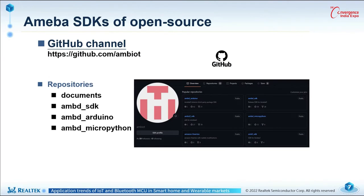After all the hardware introduction, let us move to the software side. Currently, all SDKs are listed under our GitHub channel. GitHub is a provider of internet hosting for software development and version control using Git, and it is the largest source code host as of November 2021. There are four repositories I am going to introduce: Documents, Amoeba-D SDK, Amoeba-D Arduino, and Amoeba-D MicroPython.